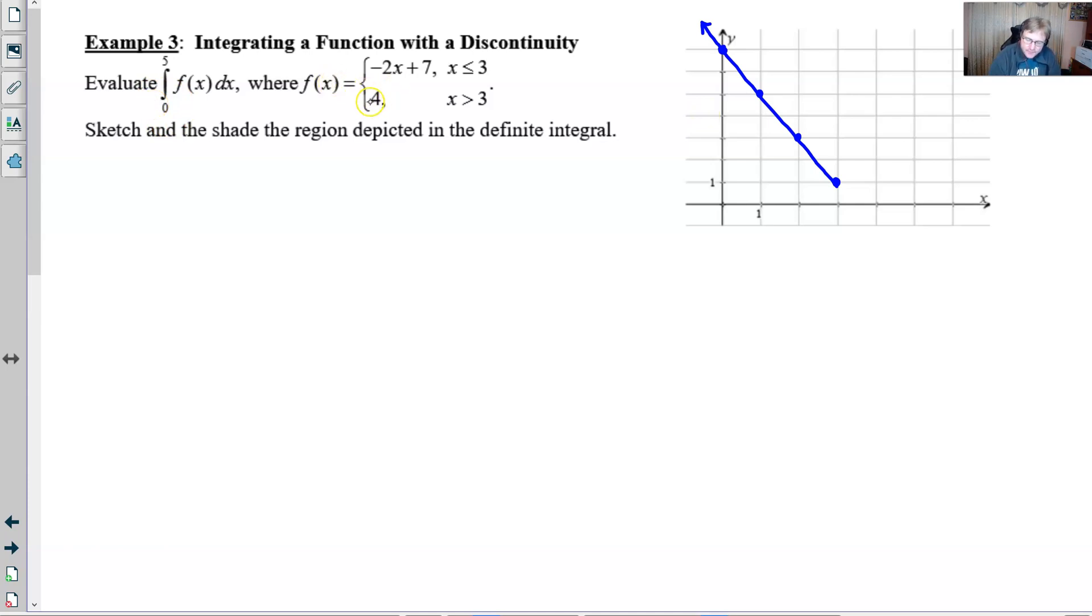Next let's sketch a graph of 4. Well we know that's just the horizontal line up here at four, but it's not going to exist until you get beyond three. So you essentially would have an open circle here at the point three comma four, and then your graph takes shape and exists all the way to infinity for x. Now that's what the graph would look like of the piecewise function.